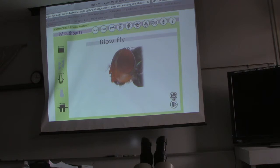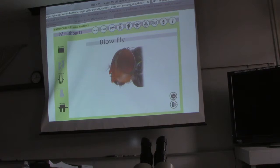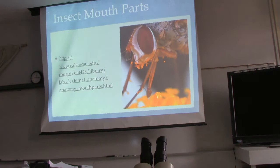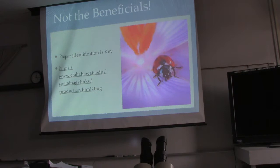So, we have mouth structures. Part of our activity today is — you're going to take your insects, put them under the microscope, and identify which mouth part it has, and tell us what it is and why. Who do I kill or prevent? Not the beneficials. Use proper identification as a key. And let's look at this link.